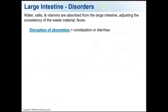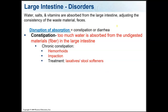Water, salts, and vitamins are absorbed from the large intestine, and this adjusts the consistency of the feces. Disorders can occur in this adjustment — two of them are constipation and diarrhea. Constipation is too much water absorbed from the undigested material or fiber left in your colon. Chronic constipation can lead to hemorrhoids and fecal impaction. Treatment of constipation is laxatives and/or stool softeners.